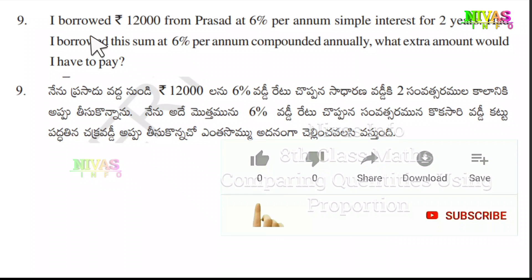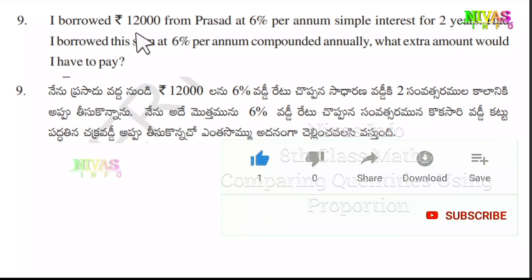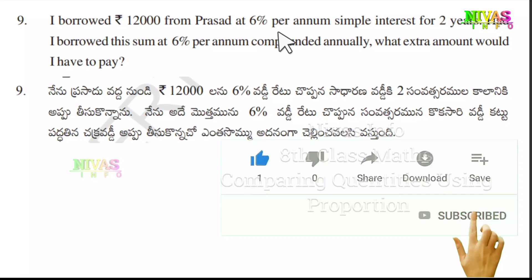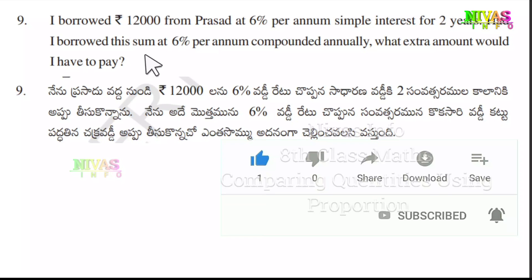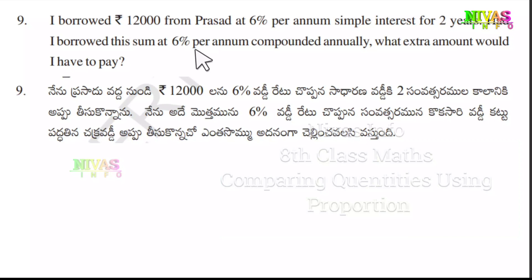Question number 9. I borrowed Rs. 12,000 from Prasad at 6% per annum simple interest for 2 years. Had I borrowed this sum at 6% per annum compounded annually, what extra amount would I have to pay?